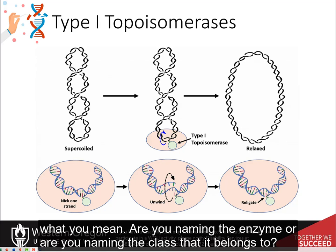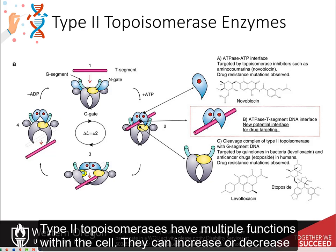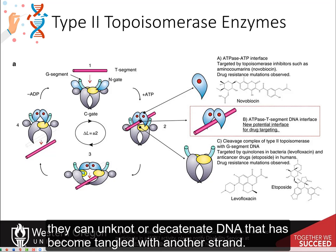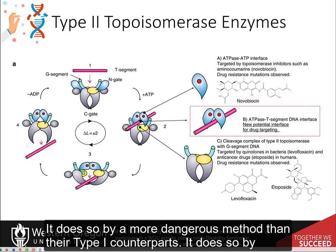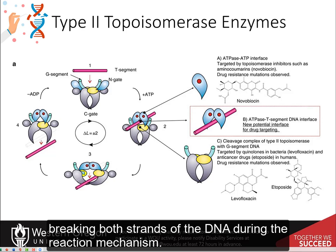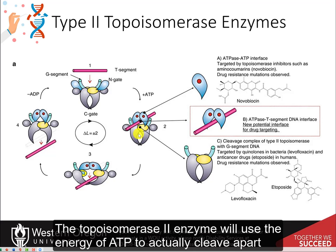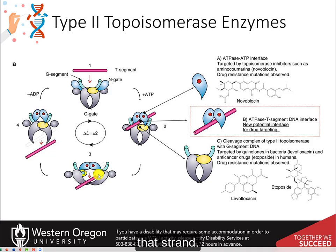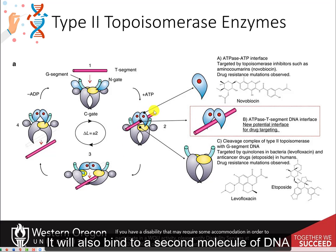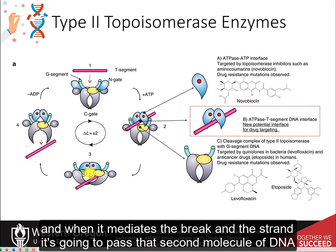Type 2 topoisomerases have multiple functions within the cell. They can increase or decrease winding tension within the DNA, or they can unknot or decatenate DNA that has become tangled with another strand. They do so by a more dangerous method than their type 1 counterparts — by breaking both strands of the DNA during the reaction mechanism. One strand of DNA binds with the topoisomerase-2 enzyme, which uses the energy of ATP to cleave apart that strand. It will also bind to a second molecule of DNA and pass that second molecule through the break.